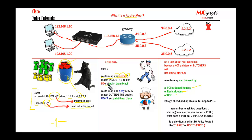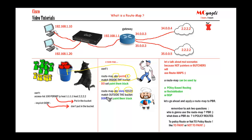Every route map also has an implicit deny, just like ACLs. Here, 'ABC' is the name of the route map, similar to when we create an ACL. The sequence number works the same way. The match keyword speaks for itself — when it says 'match inside the bucket' it means the cats in the bucket, and 'match outside the bucket' means those cats outside.